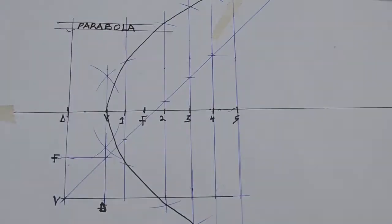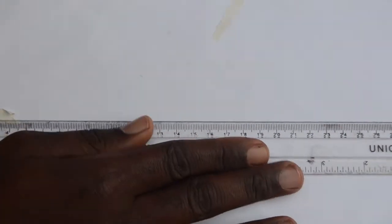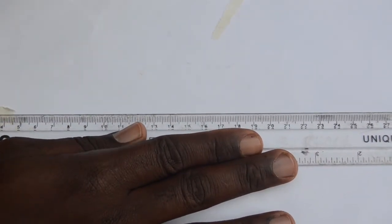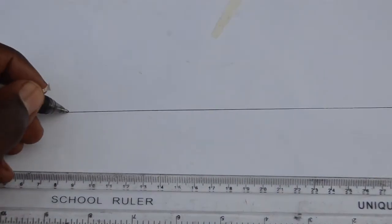We are going to see how you construct a parabola given the ratio of eccentricity and the distance between the directrix and focus. We start by constructing a horizontal line, and this line we have constructed acts as our axis.